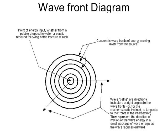A wavefront diagram is a two-dimensional picture of a wave, usually a bird's-eye view. For example, imagine a calm body of water with a water bug jumping up and down, creating small ripples that spread outward. Each of these concentric circle lines represents the wavefront diagram — each line represents the crest of the wave. You can measure the wavelength by measuring the distance from crest to crest, the distance between these two lines.